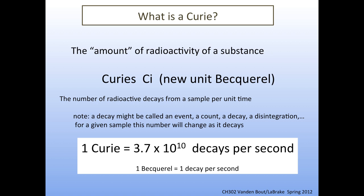This decay could be described in a number of ways — it might be called an event, a count, a decay, or a disintegration. It's simply saying that there's been a radioactive decay event. For a given sample, the curies will change over time because as it decays, there'll be less and less radioactive material. So a curie is a number for a sample at any given moment.